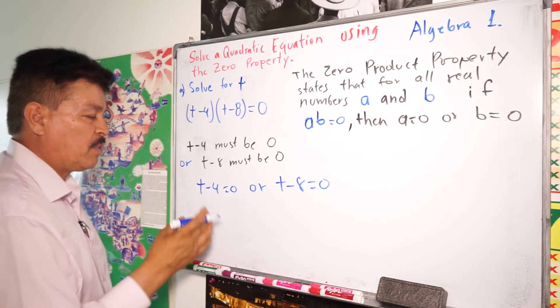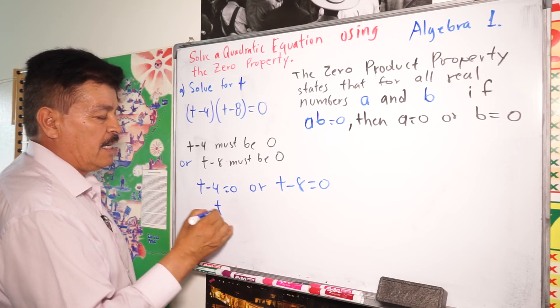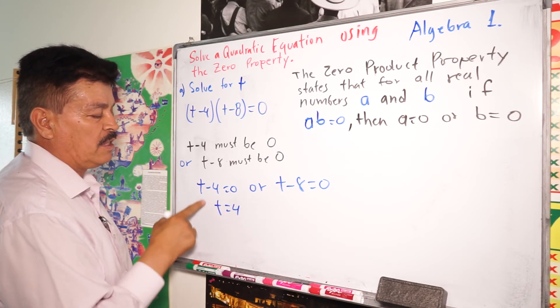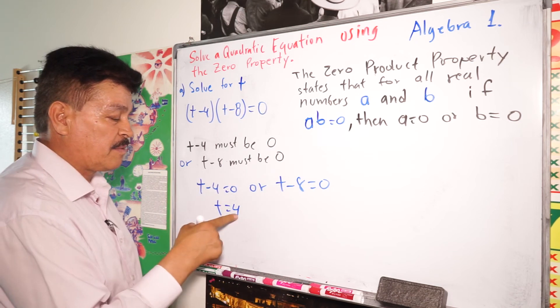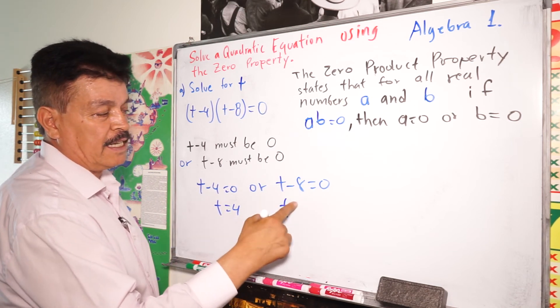See? Very simple. Now it's not hard. So here is going to be t = 4 positive. Here is negative, the other side is positive.